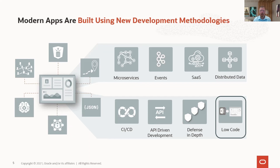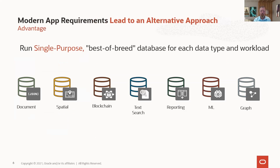The landscape has really changed. Modern-day applications are much more flexible — we can build them out and evolve them very quickly. It's only natural that, like in many other areas of our high-tech world, specialists come out of the market. Single-purpose, best-of-breed databases started being built: document databases, blockchain, reporting, machine learning — built out for all these different purposes.